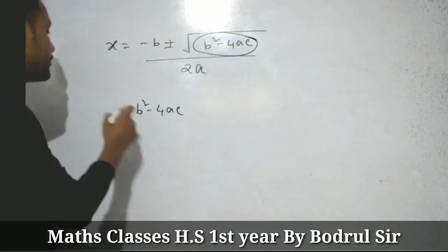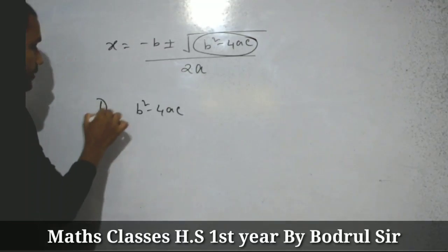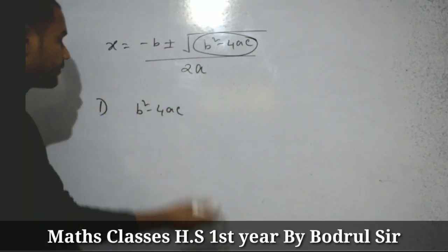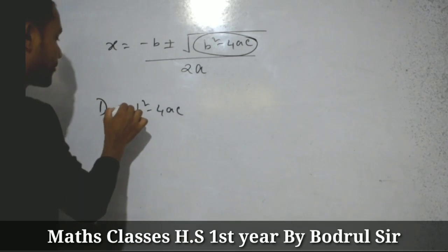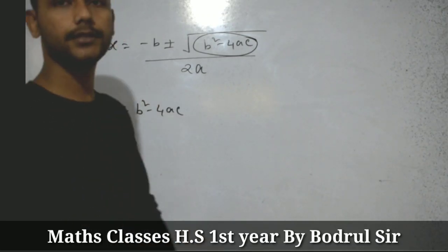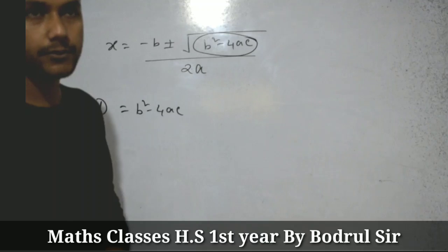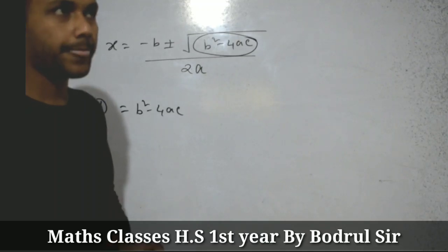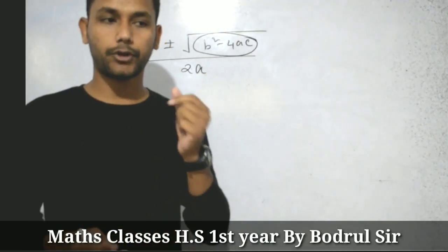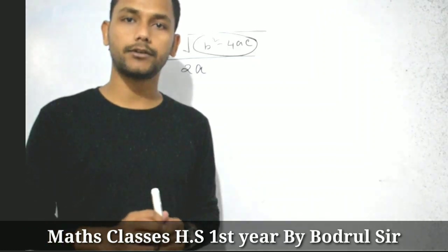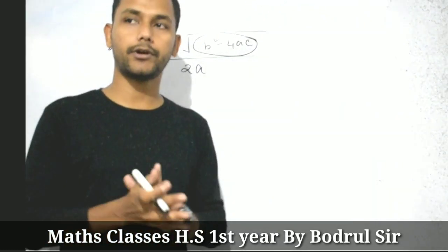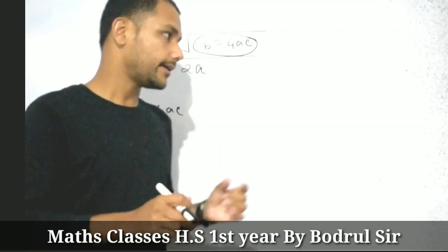This quantity b squared minus 4ac is generally known as the discriminant. It is denoted by the capital letter D. So, D equals b squared minus 4ac. Students, I am going to discuss the rules of any quadratic equation based on the discriminant.